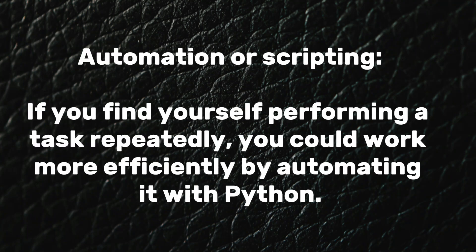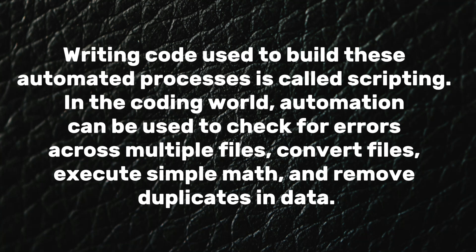Automation or scripting: if you find yourself performing a task repeatedly, you could work more efficiently by automating it with Python. Writing code used to build these automated processes is called scripting. Automation can be used to check for errors across multiple files, convert files, execute simple math, and remove duplicates in data.